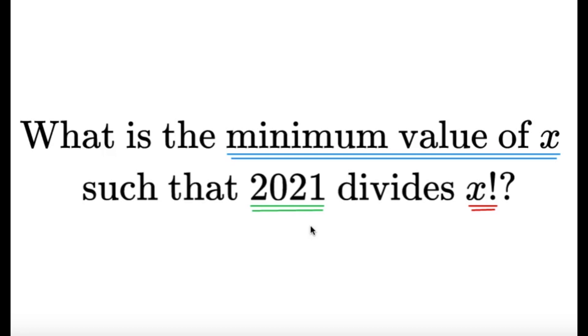For this one, what is the minimum value of x such that 2021 divides x factorial?